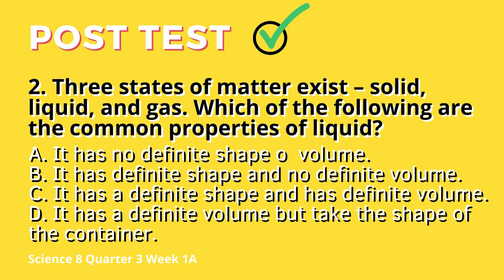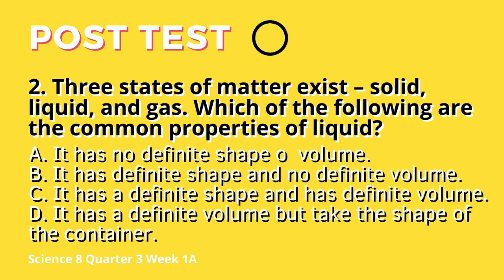Question 2: Three states of matter exist — solid, liquid, and gas. Which of the following are the common properties of liquid? A. It has no definite shape or volume. B. It has definite shape and no definite volume. C. It has a definite shape and has definite volume. D. It has a definite volume but takes the shape of the container.